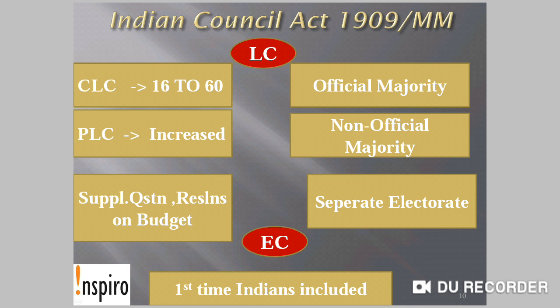Non-official majority was allowed, meaning in some provinces the official members may have a majority and in some provinces the non-official members may have a majority. Supplementary questions and resolutions on the budget were also allowed under Indian Council Act 1909. The most important provision was the separate electorate or communal electorate — a separate electorate granted for the Muslim community, meaning Muslims could contest seats where only Muslims could participate in voting.